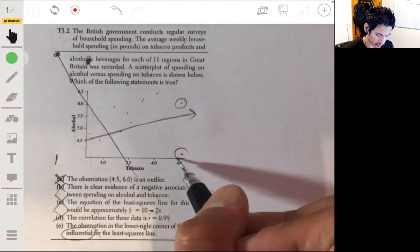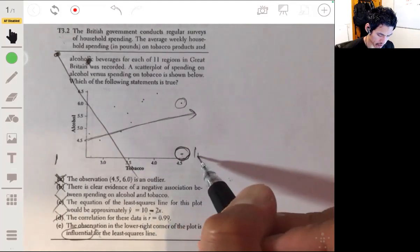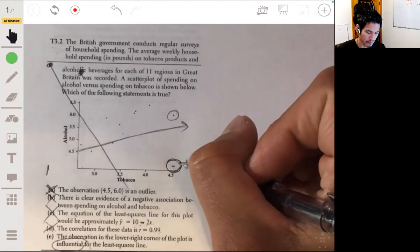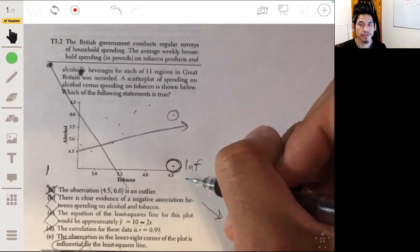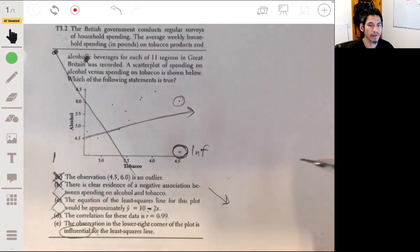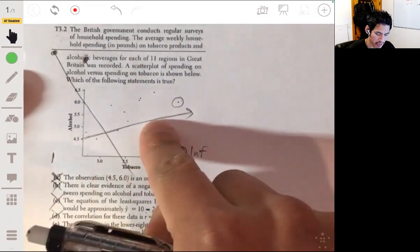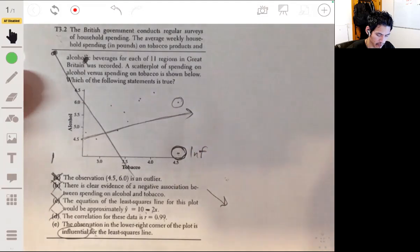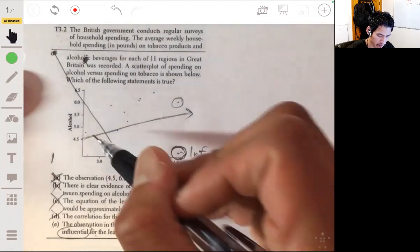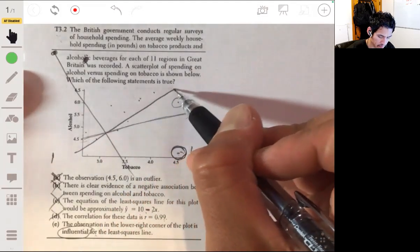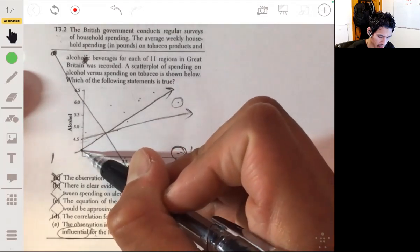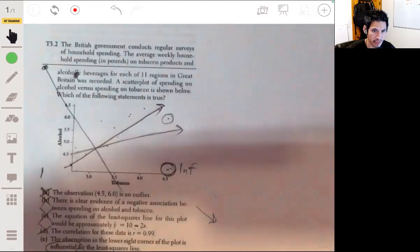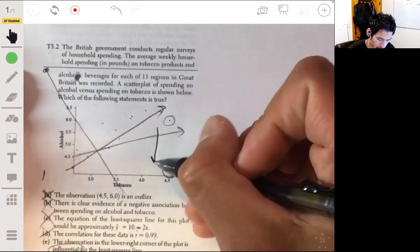So let's remember what influential means. This point right here is our influential point. That means that this has basically a strong effect on the least squares regression line. It basically pulls it down in a way. So if this thing wasn't here, our line would probably be more like this. The y-intercept would get lower and the slope would be higher, but this is influencing the point—it's pulling the line downwards towards it.